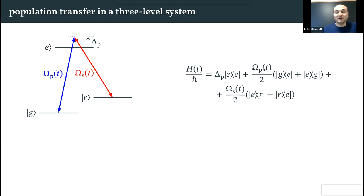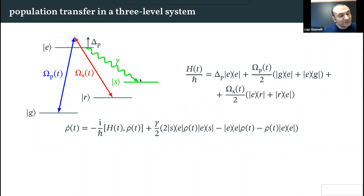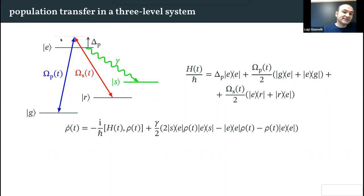The Hamiltonian is written in a rotating frame, so we have only the detuning of the laser pulses with the excited state, and then the pumping of the transitions: omega_p for the g-e transition and omega_s for the e-r transition. We also consider decay from the excited state e with rate gamma, and collect this decay into an auxiliary sink state s. We model this as a Born-Markov process with the Lindblad master equation, which models decay of the excited state to states outside this three-level system.